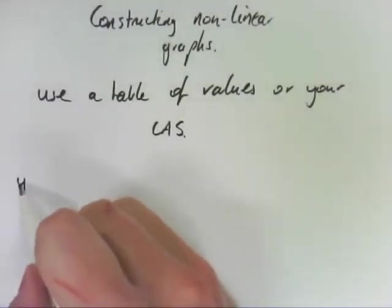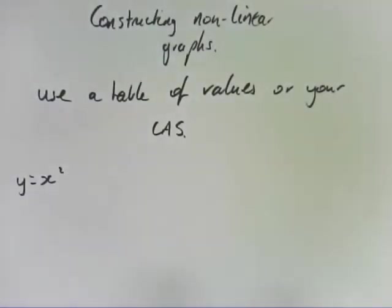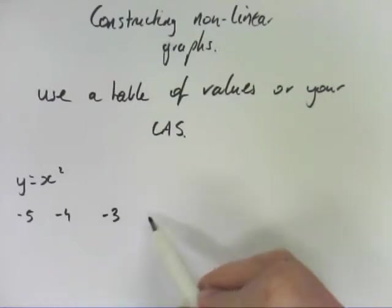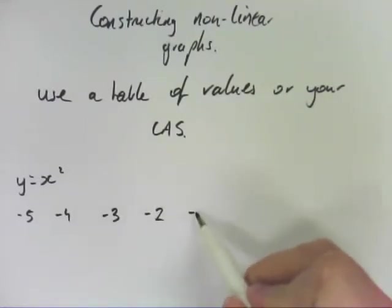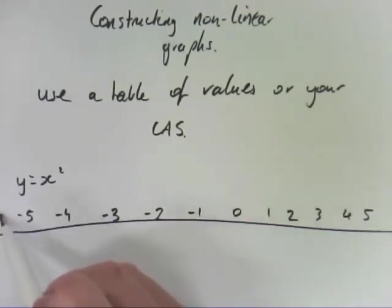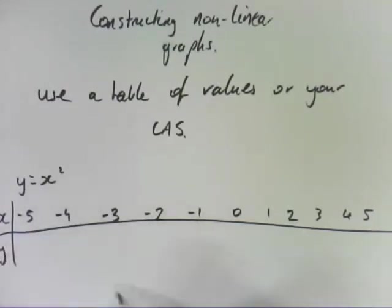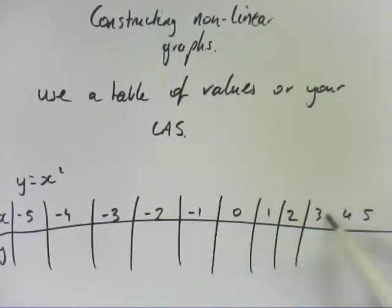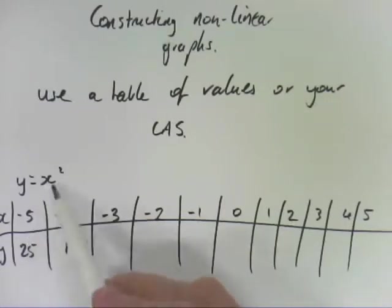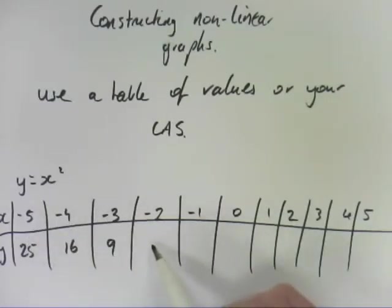So, for example, if you were asked to draw the graph y equals x squared, what you would do is just do a table of values because it's said to do it between negative 5 and positive 5. So if that's x and this is y, then you just work out what that value will be. I'm just squaring x. So negative 5 squared is 25, negative 4 squared is 16, and so on and so forth.